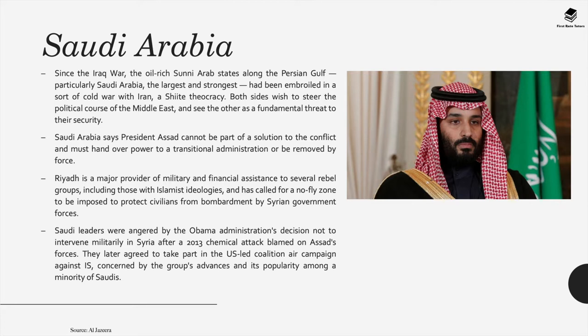Riyadh is a major provider of military and financial assistance to several rebel groups, including those with Islamist ideologies, and has called for a no-fly zone to protect civilians from bombardment by Syrian government forces. Saudi leaders were angered by the Obama administration's decision not to intervene militarily in Syria after a 2013 chemical attack blamed on Assad's forces. They later agreed to take part in the US-led coalition air campaign against IS, concerned by the group's advances and its popularity among a minority of Saudis.